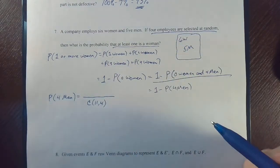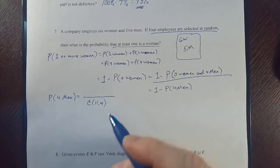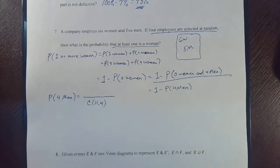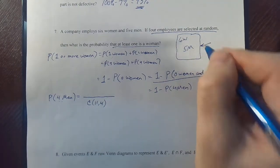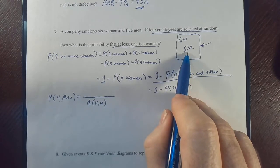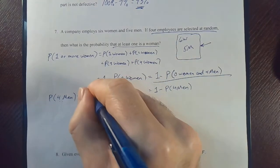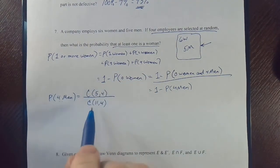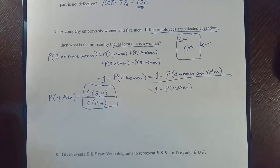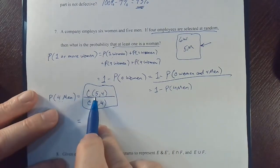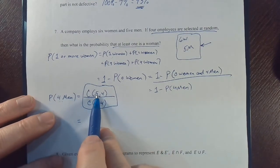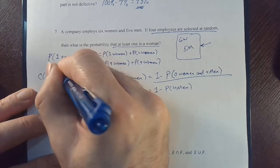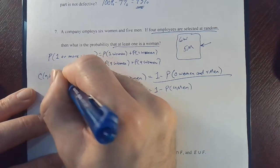The numerator is the number of ways favorable to what we're looking for — how many ways can you get four men? There are five total men, and I want to choose four of them: combination five choose four. That is the answer, though it's not simplified. Remember the combination formula: n choose k equals n factorial over (n minus k) factorial times k factorial. In this case n equals five and k equals four.